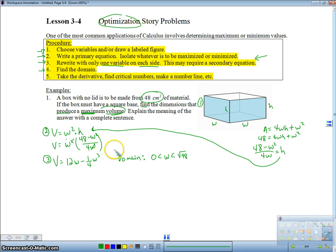So if we had no height, we would basically have the biggest possible width we would have in this box, which wouldn't even be a box. It would just be like cardboard. But this is our domain for this situation. So we've got our domain now. So this is number four. So now what are we going to do? We're going to take the derivative, find the critical numbers, make a number line, et cetera, et cetera, et cetera. So I'll show you what that et cetera is.